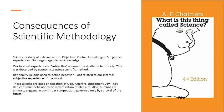These axioms are based on rejection of God, afterlife, and judgment, and therefore they depict human behavior as maximization of pleasure, at least for rationality. Also, the understanding emerged based on evolutionary ideas that we are just a kind of animals. There is no meaning to life. Life is a jungle of cutthroat competition governed only by the survival of the fittest. These are the ideas on which economic theory in particular and social sciences in general are built.